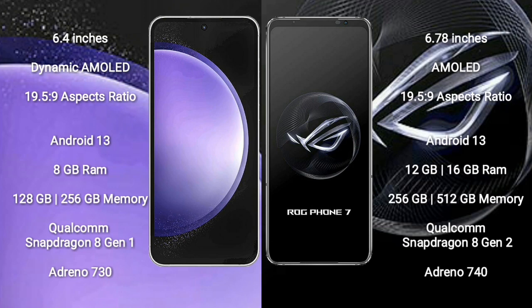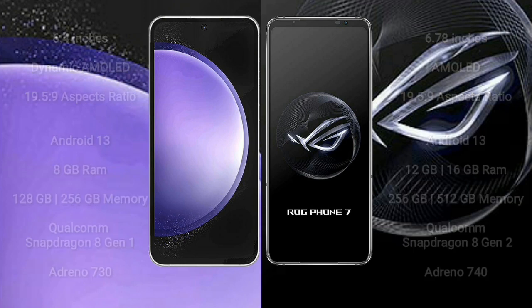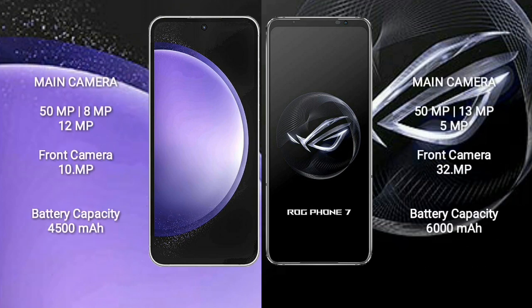Samsung Galaxy S23 FE comes with 8GB RAM and 128GB or 256GB internal storage, Qualcomm Snapdragon 8 Gen 1 processor, and Adreno 730 GPU. Asus ROG Phone 7 comes with 12GB or 16GB RAM and 256GB or 512GB internal storage, Qualcomm Snapdragon 8 Gen 2 processor, and Adreno 740 GPU.